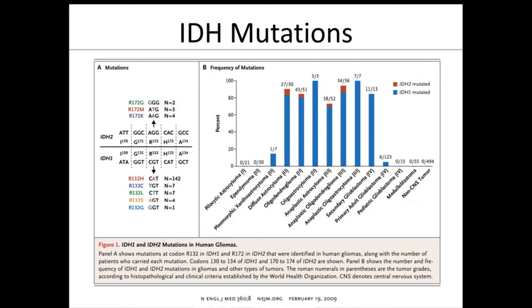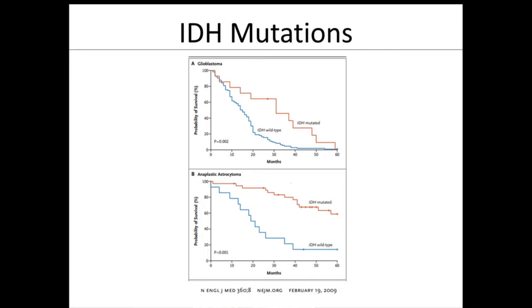IDH mutations are frequently discussed in tumor board and are the subject of significant research interest here. Original work published in the New England Journal in 2009 showed the frequency of IDH mutations across various tumors: primary adult GBMs rarely harbor IDH mutations, while secondary GBMs and lower-grade astrocytomas and oligodendrogliomas often do. This work influenced the current WHO classification. IDH mutant tumors — whether former secondary GBMs or anaplastic astrocytomas — do much better; it is simply a better molecular tumor.